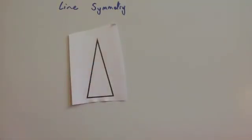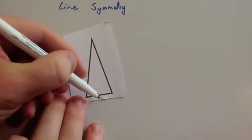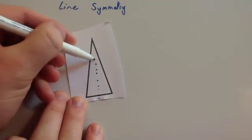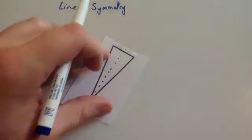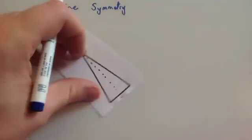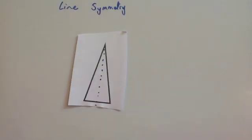But if it's not a regular shape, it won't have the number of lines of symmetry equal to its number of sides. For instance, this isosceles triangle only has one line of symmetry vertically through the middle — it definitely doesn't have three. If it's scalene, it may have zero. It all depends on the shape, and you'd have to look at it on an individual basis.